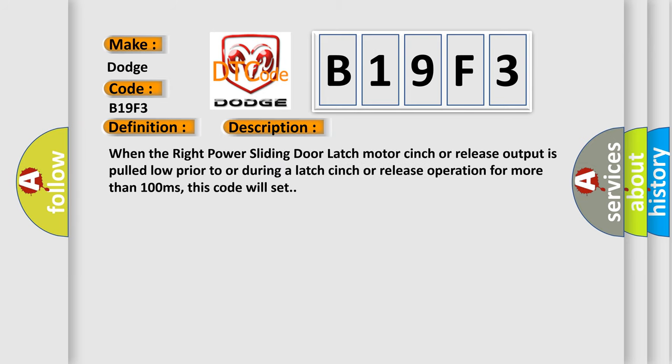When the right power sliding door latch motor cinch or release output is pulled low prior to or during a latch cinch or release operation for more than 100 milliseconds, this code will set. This diagnostic error occurs most often in these cases.